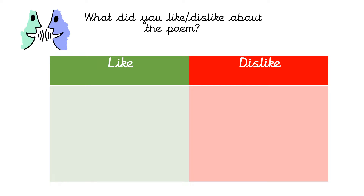I hope you enjoyed listening to the poem. Now I would like you to have a discussion — talk to your adult and tell them anything that you did like about the poem, and anything that you disliked. You can just have a discussion, or you can draw a table with 'like' on one side and 'dislike' on the other and write down your ideas.